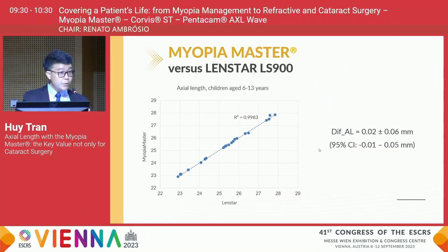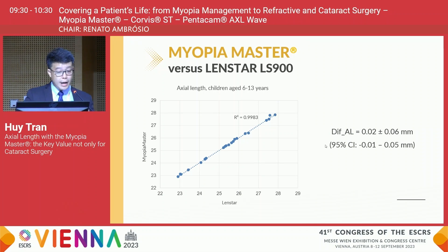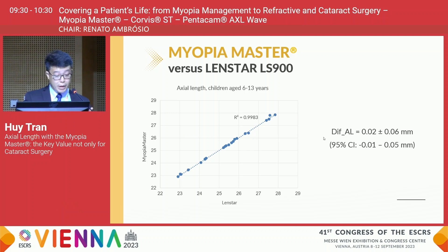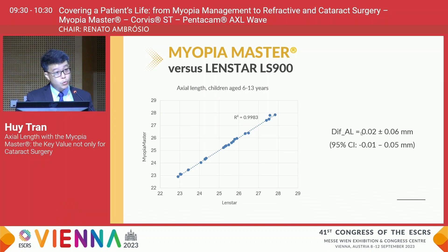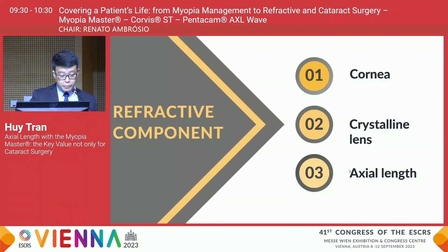To review the repeatability and reliability of Myopia Master measurements, we compared a sample of measurements from our Myopia Master system with another biometer. In children aged 6 to 13 years old with myopia, the difference between the two devices was quite substantially low. The mean difference of axial length was about 0.02 millimeters, with a 95% confidence interval ranging between −0.01 to 0.05 millimeters.